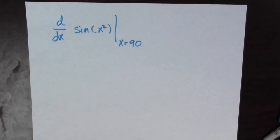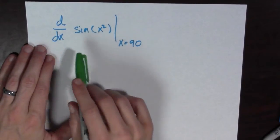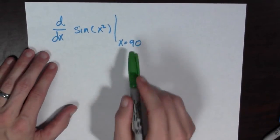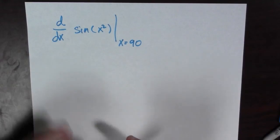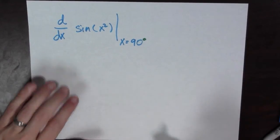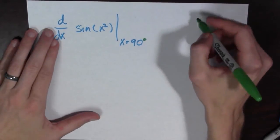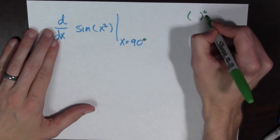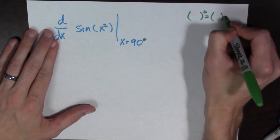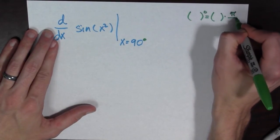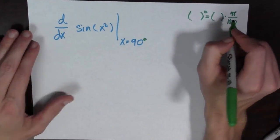Let's look at our other example now. And so we had derivative with respect to x of sine of x squared, and we're evaluating this at 90, and now I put my little degree sign in here, and this degree sign, of course, means that I'm multiplying by, remember, blank degrees means blank times pi over 180.